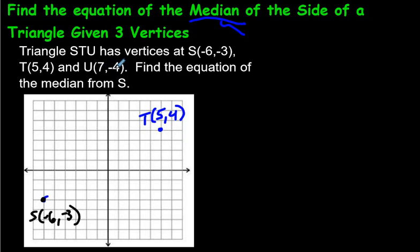And then let's plot this one, 7, negative 4, so U is 7, negative 4.